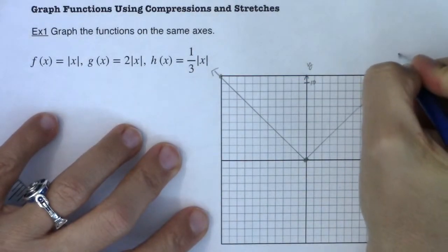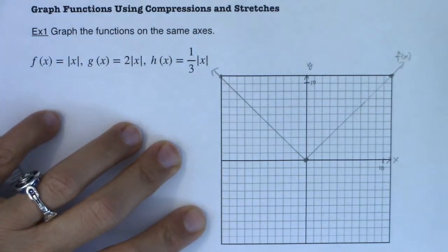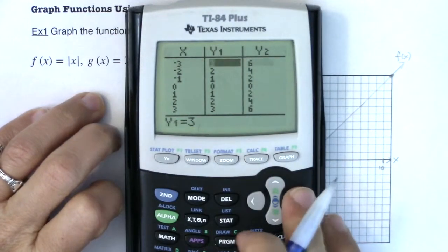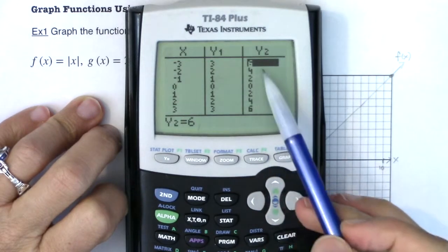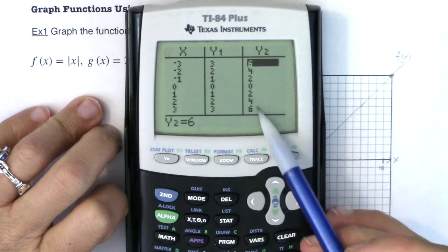So let me draw that one in. Alright, so this one here would be f of x because it is just the absolute value of x. Yeah, the absolute value of x. Let's draw g of x. Now that one is double, so instead of going three, two, one, zero, one, two, three, I'm going to go six, four, two, zero, two, four, six.